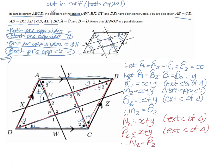What we have proven is that both pairs of opposite angles of this shape are equal — in fact all four angles are equal, which means it's not only a parallelogram but actually a rectangle. But at a minimum, the shape is a parallelogram. So MNOP is a parallelogram because both pairs of opposite angles are equal.